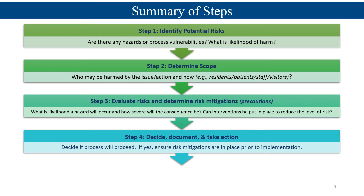The fourth step is to decide, document, and take action. This is where you will decide: is the process going to proceed? And if it is, what am I going to put in place — what risk mitigations, what steps, what processes? You want to make sure whatever you're going to do is in place prior to implementation. There might be a few things needed during implementation: education and training of staff, updating policies and procedures, special equipment, special setup or planning.